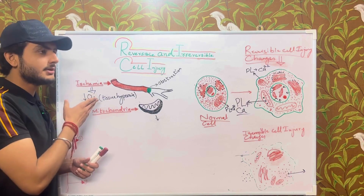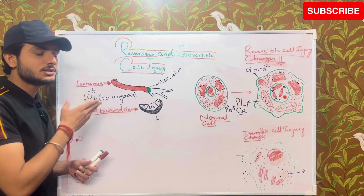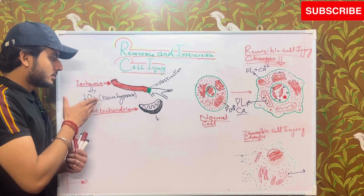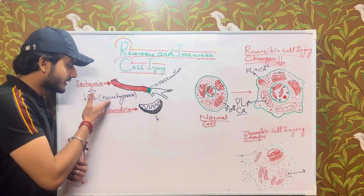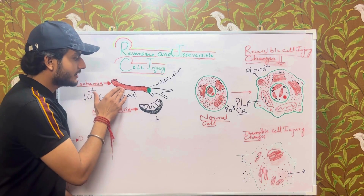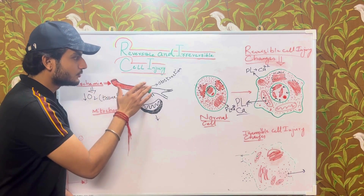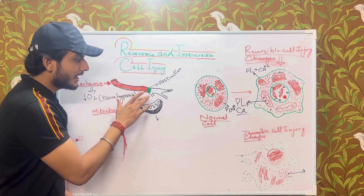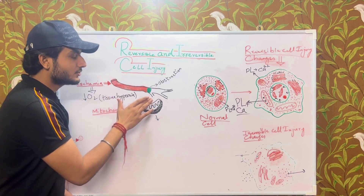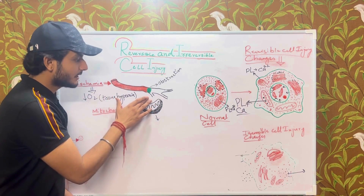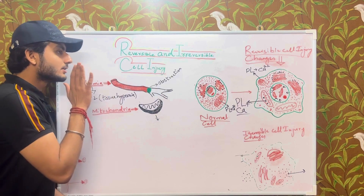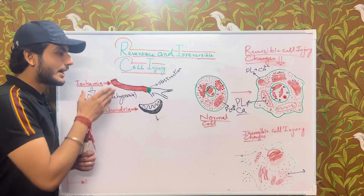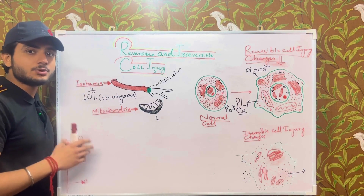Ischemia is the reduced blood supply to the tissue. Due to this reduced blood supply, oxygen delivery to the tissue also decreases. You can clearly see the blood vessel — due to an obstruction, blood supply to the tissue has decreased, and also the delivery of oxygen to the tissue has decreased, resulting in tissue hypoxia.